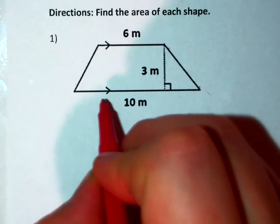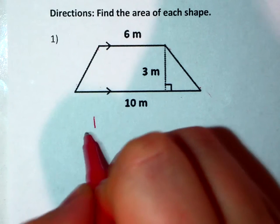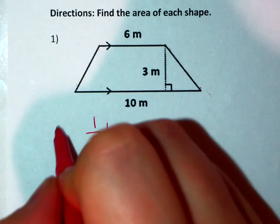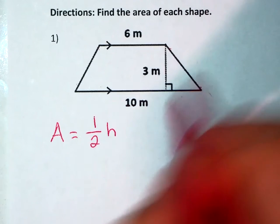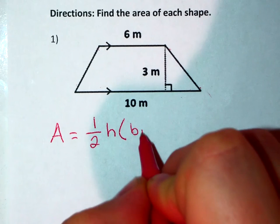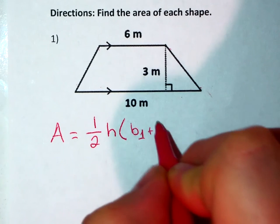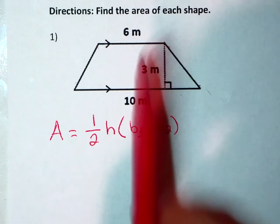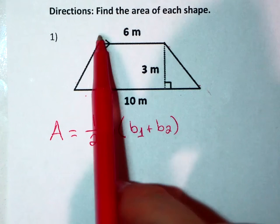Our formula for a trapezoid was 1/2 height times base 1 plus base 2. We get the base 1 and base 2 from the measures of our parallel lines.